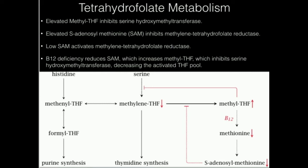When methyltetrahydrofolate is elevated, it inhibits serine hydroxymethyltransferase. Inhibiting serine hydroxymethyltransferase means you stop producing methylene tetrahydrofolate. So B12 deficiency reduces S-adenosylmethionine, which transiently increases methyltetrahydrofolate, which inhibits serine hydroxymethyltransferase and kills the production of methylene tetrahydrofolate — ultimately decreasing the activated tetrahydrofolate pool.